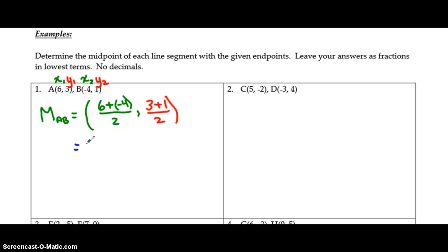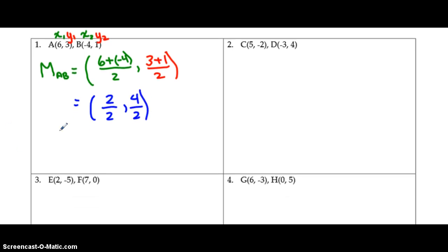The next thing we are going to do is add the numerators. 6 plus negative 4 is 2 divided by 2. 3 plus 1 is 4 divided by 2. And, where appropriate, you are going to put your fractions into lowest terms with no decimals. 2 divided by 2 is 1. 4 divided by 2 is 2. So, the midpoint of line segment AB is equal to (1, 2).